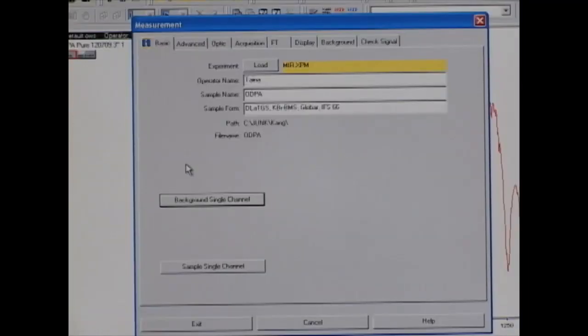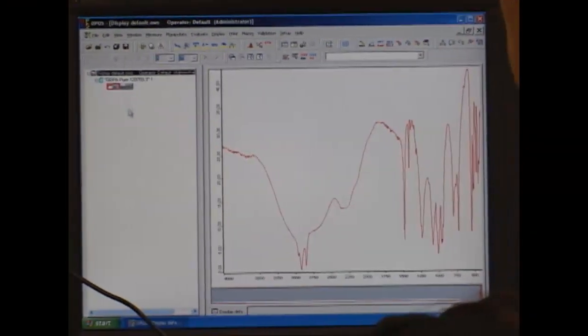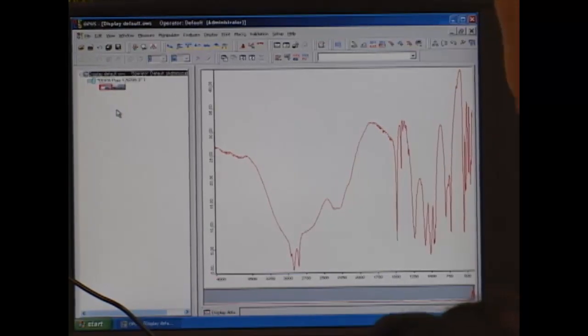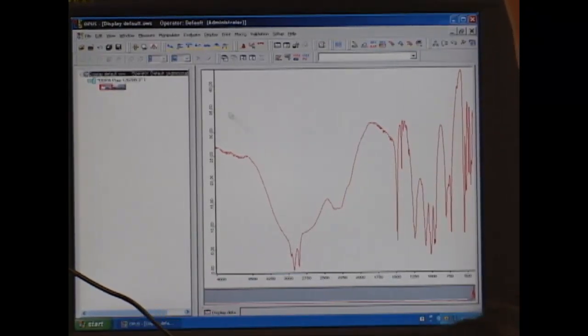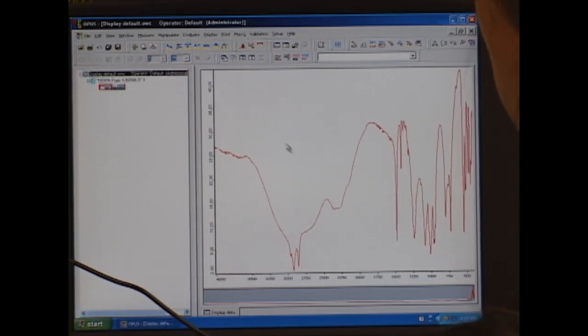After the background signal is completed, now we're going to move on to run our actual sample. We do that by clicking on Sample Single Channel. After our data is collected, we're able to obtain a signal or a spectrum on the front page as soon as the experiment is completed.